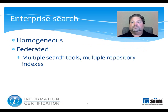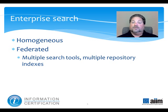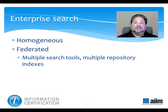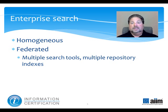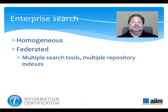Federated Search orchestrates search not only across multiple repositories, but involves separate and distinctively different search engines. For example, Search Tool X is used to index your document management system, Search Tool Y indexes your email, and Search Tool Z indexes your web-based content. In the Federated Search model, one search engine is selected as the master or orchestrator. It accepts the query and passes it on to the heterogeneous search engines running within each repository, then synthesizes and rationalizes the multiple result sets.